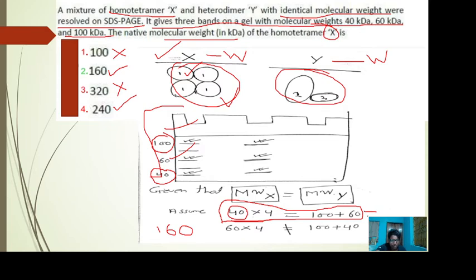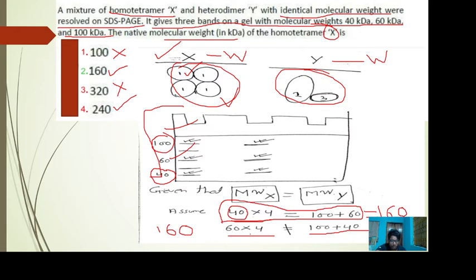From this we can conclude that the molecular weight of both X and Y in their native form will be 160 kDa. If we assume the subunit of X is 60 kDa, then four subunits give 240 kDa. But then Y's subunits would be 100 and 40, giving Y a molecular weight of 140 kDa — which is not equal to 240. Since the question states X and Y have the same molecular weight, 240 is wrong. Therefore, the answer is 160 kDa.